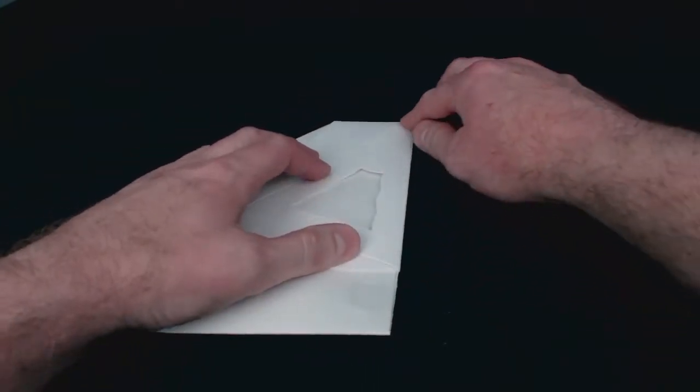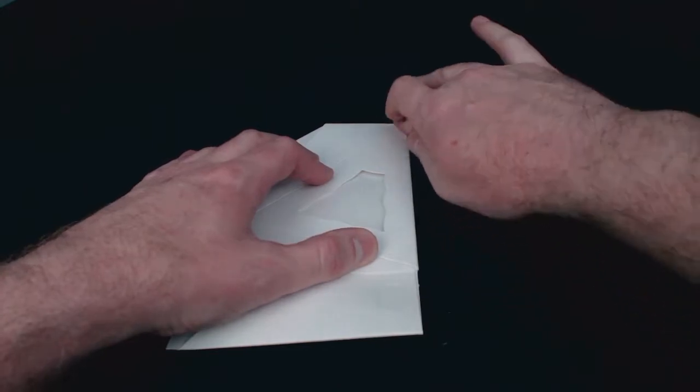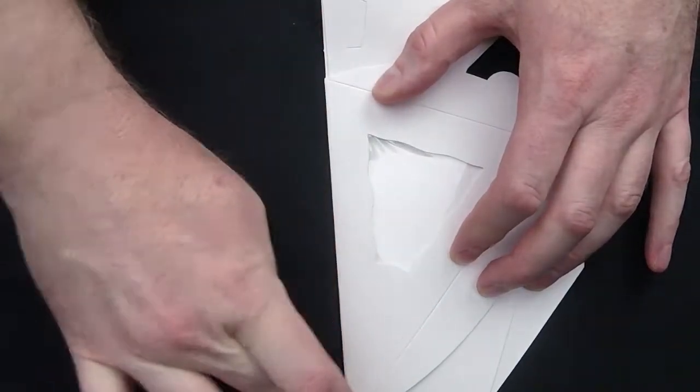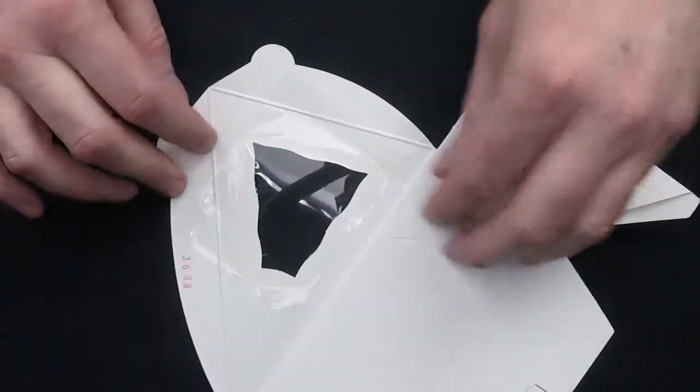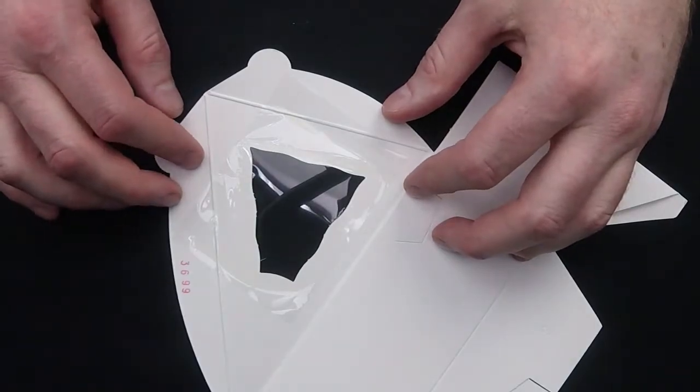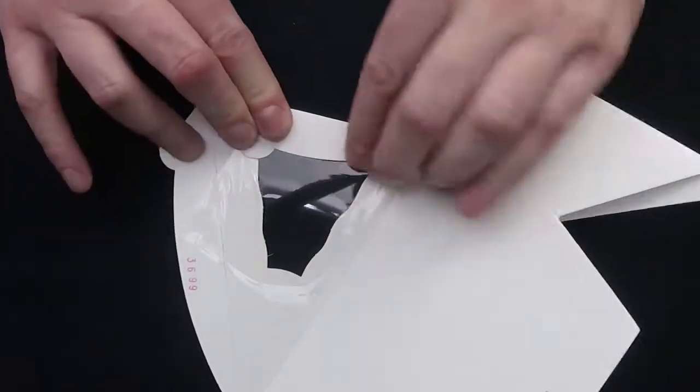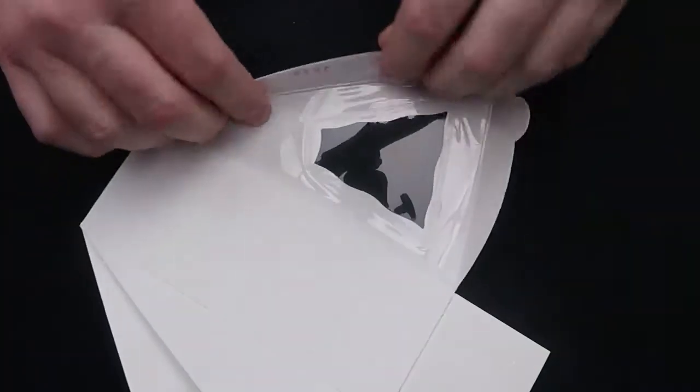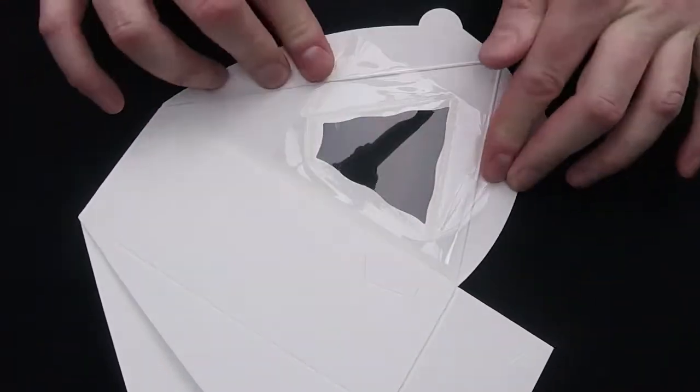We're just going to pre-break, fold the score, the longest score on the lid, all the way over. Fold it back out. Next, we'll do the flaps that are along the lid. Just fold those over 180 degrees. Fold them back out.